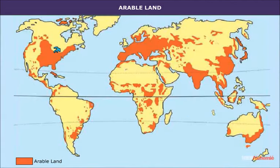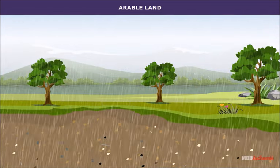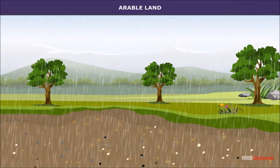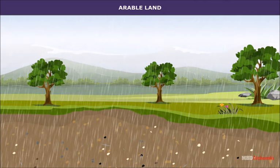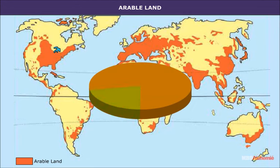The favorable conditions relating to topography of land, soil, climate and relief are vital for agricultural activity and growing crops. The land on which crops are grown is known as arable land. You will notice that agriculture is carried on only in certain parts of the world. However, 45% of the world's population make their living through agriculture. The proportion varies from 2 to 4% in developed countries to about 60 to 80% in developing countries.